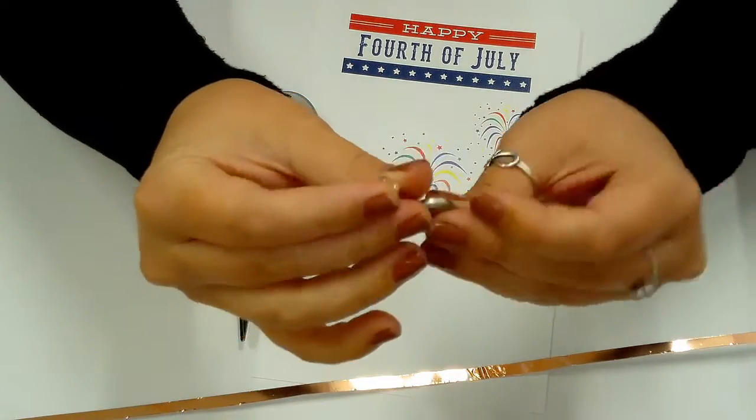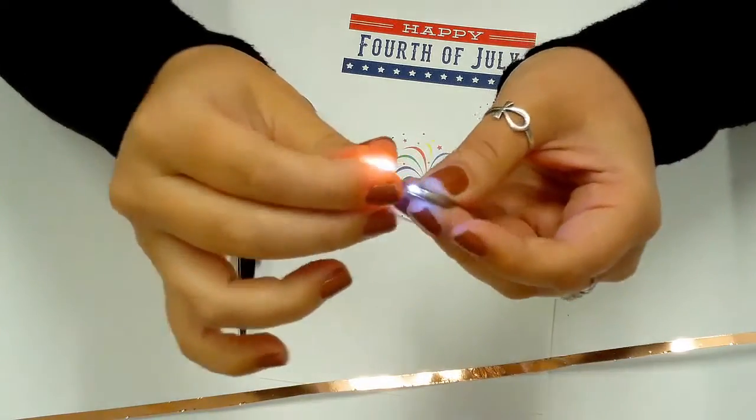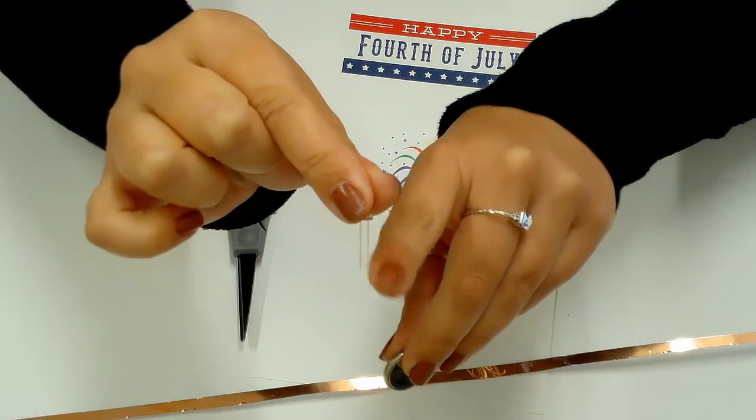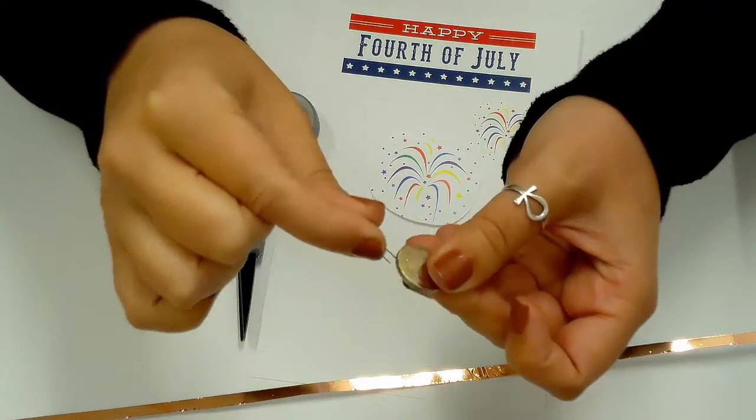You can check to make sure the light works by placing the battery between the metal arms of the light. The longer arm is positive and the shorter arm is negative. The coin cell battery shows a positive symbol on one side. This becomes important later on.